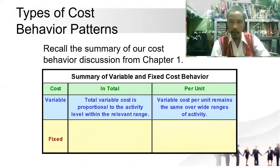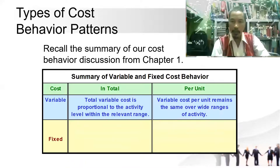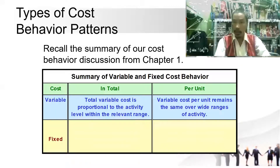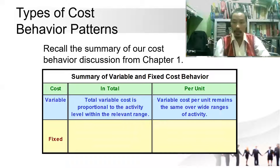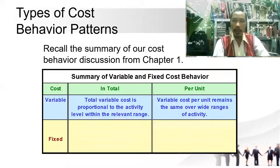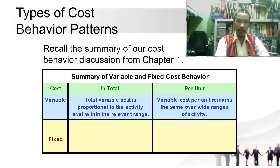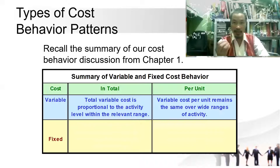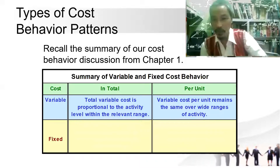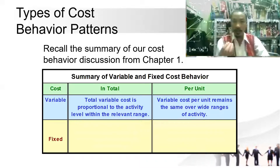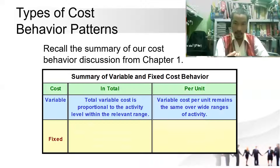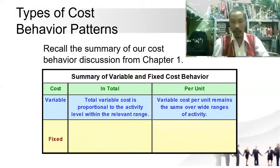When talking in terms of per unit rather than the total amount, variable cost per unit remains the same over a wide range of activity — a constant per unit amount. But in total, it is proportional.